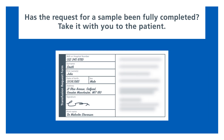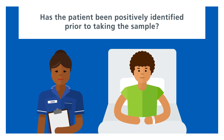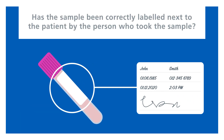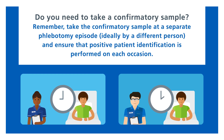Final recap. Has the request for a sample been fully completed? Take it with you to the patient. Has the patient been positively identified prior to taking the sample? Has the sample been correctly labelled next to the patient by the person who took the sample? Do you need to take a confirmatory sample? Remember, take the confirmatory sample at a separate phlebotomy episode, ideally by a different person, and ensure that positive patient identification is performed on each occasion.